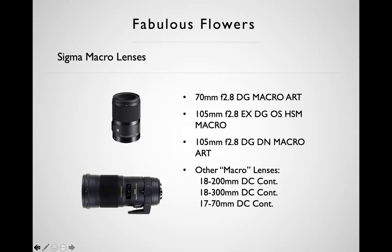The previous 105 'EX' was Sigma's earlier top-of-the-line designation, available for Canon and Nikon SLRs — and works well on their mirrorless adapters too. For crop-sensor cameras, Sigma makes an 18-200 and 18-300 in the DC line for Canon and Nikon DSLRs, all in roughly the one-to-three range. Sigma also makes a dedicated diopter for the 18-300 that brings it down to one-to-two.